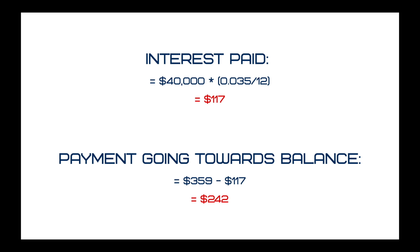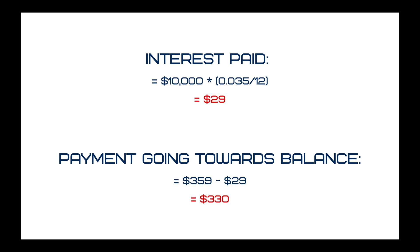For example, let's look at when you've paid off half your mortgage, so your remaining balance is $40,000. Using the same equation, the interest paid on this particular month has decreased to $117, meaning the payment going towards your balance has increased to $242 — a much larger percentage going towards pay down versus interest. This difference becomes more extreme as you pay down more. When you have $20,000 left, interest paid is only $58 compared to $301 going towards pay down. And when you have $10,000 left, your interest is only $29 per month versus $330 going towards your balance.